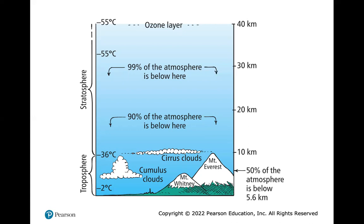At sea level going downward, the density of water is pretty much uniform, but our atmosphere is not distributed uniformly. Fifty percent of the atmosphere is below 5.6 kilometers. As you go up it becomes less and less dense and colder. At 20 kilometers, 90 percent of the atmosphere is below that level, and at 30 kilometers, 99 percent is below.